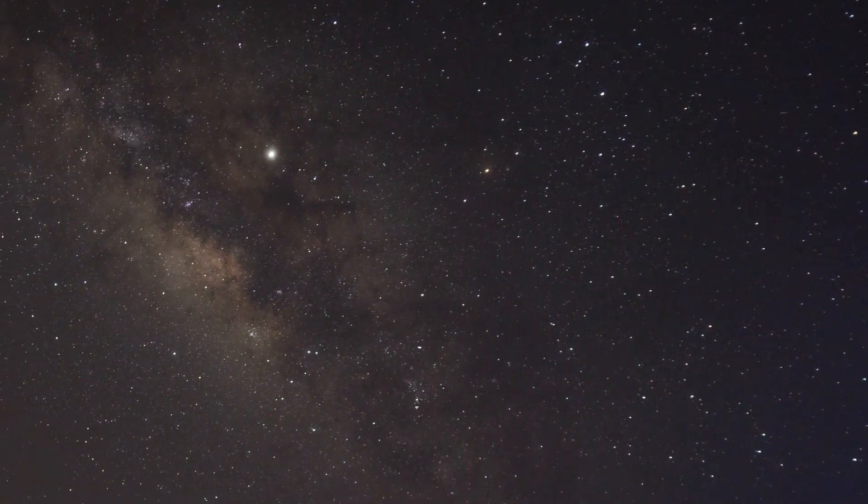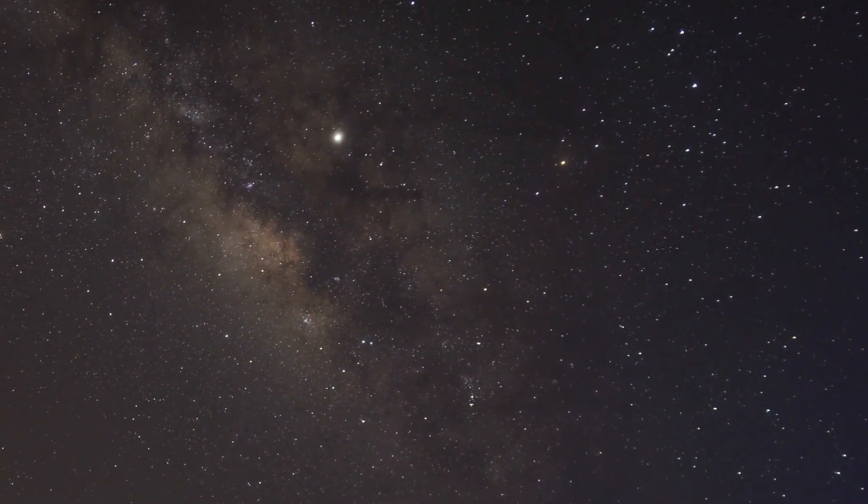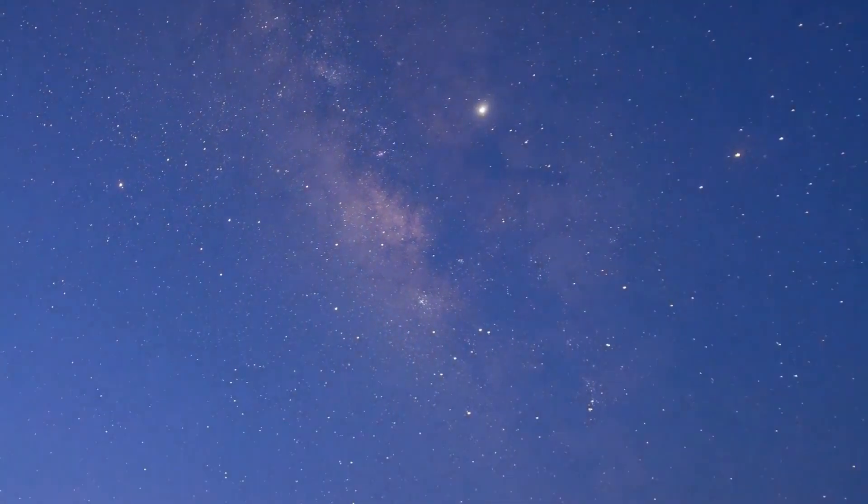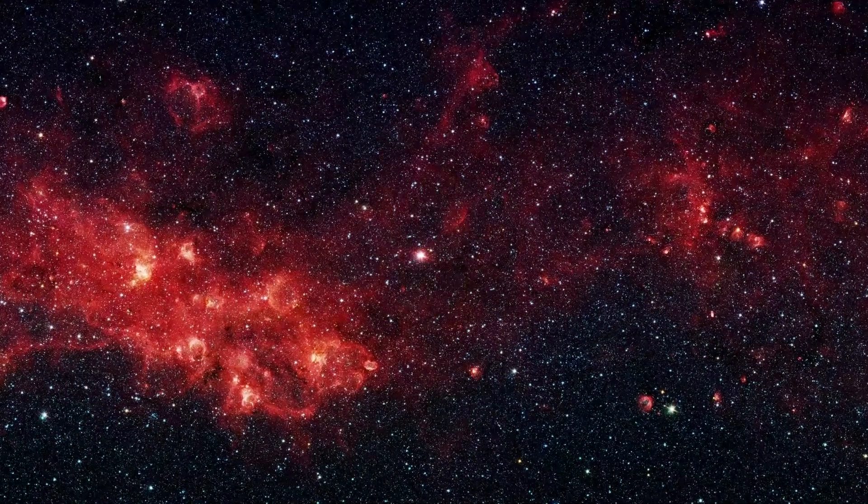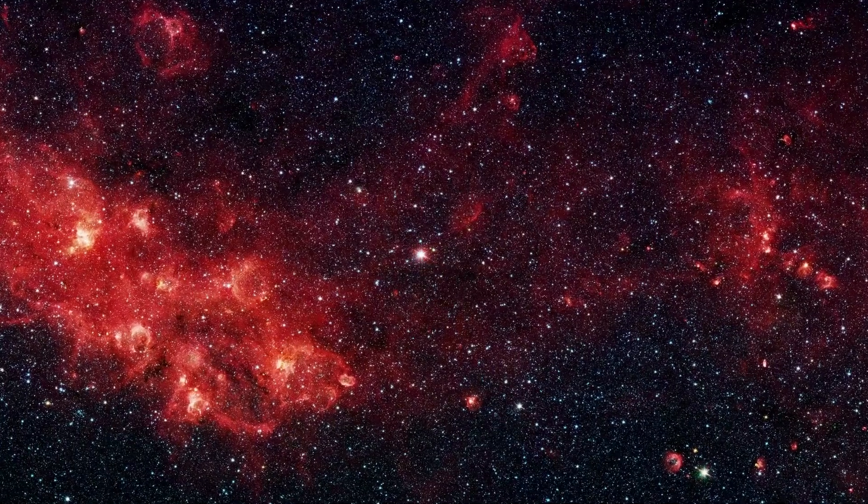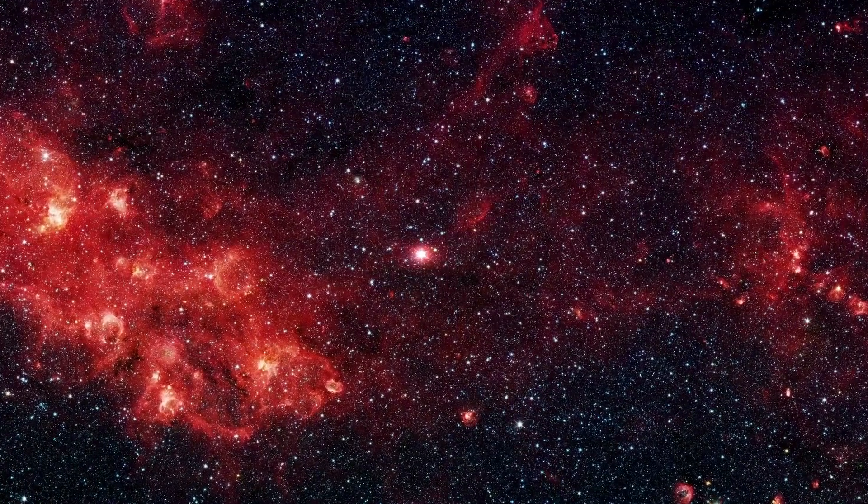To put this into context, consider the Voyager 1 probe launched in 1977. It traveled at a speed of 38,000 miles per hour and did not leave the solar system until 2012, meaning it spent 35 years just to exit our solar system.